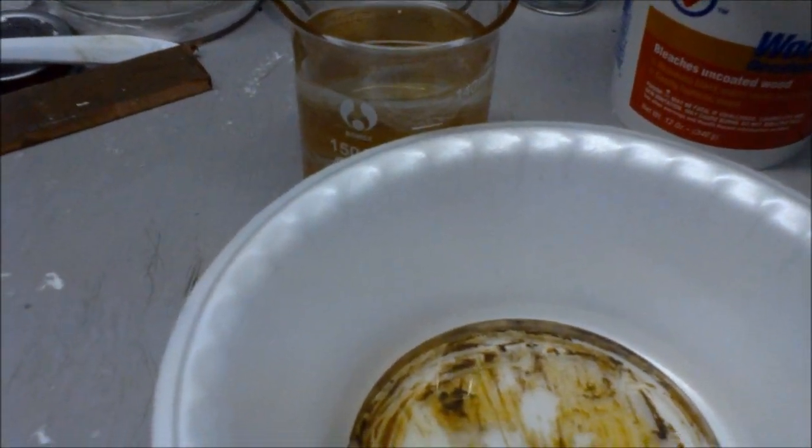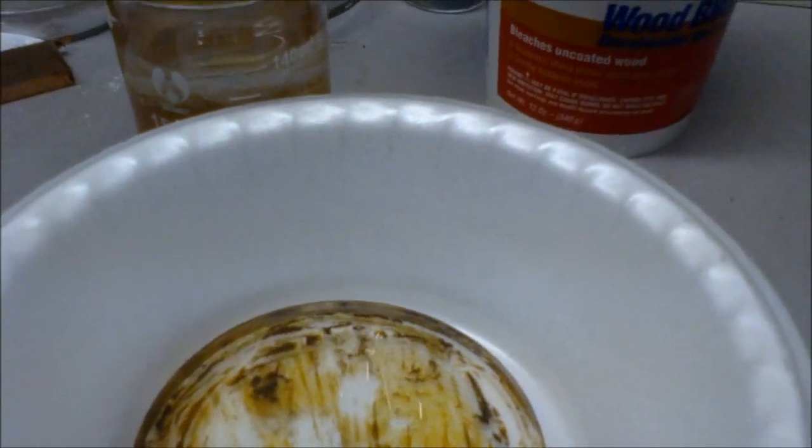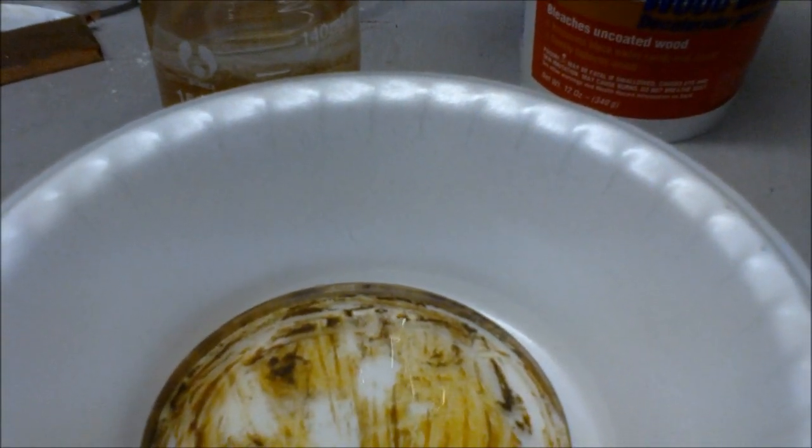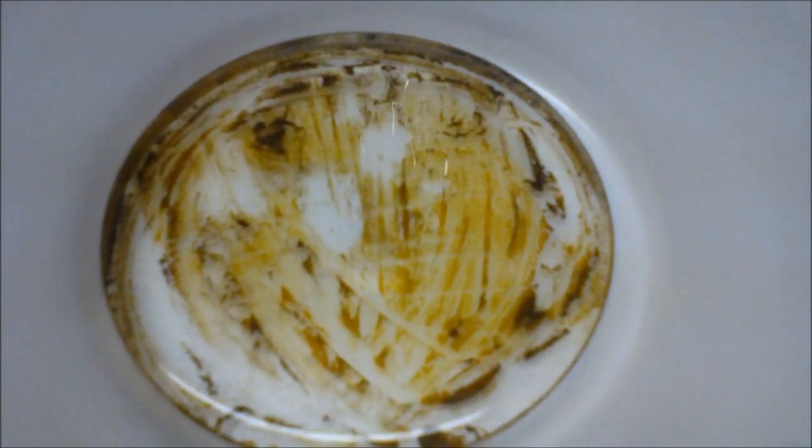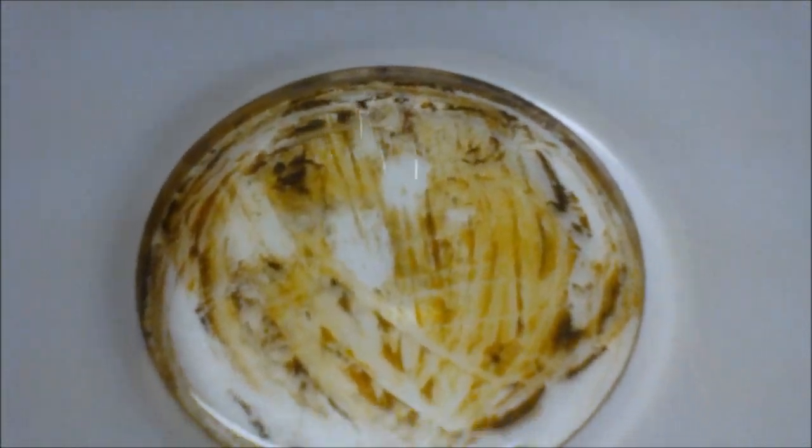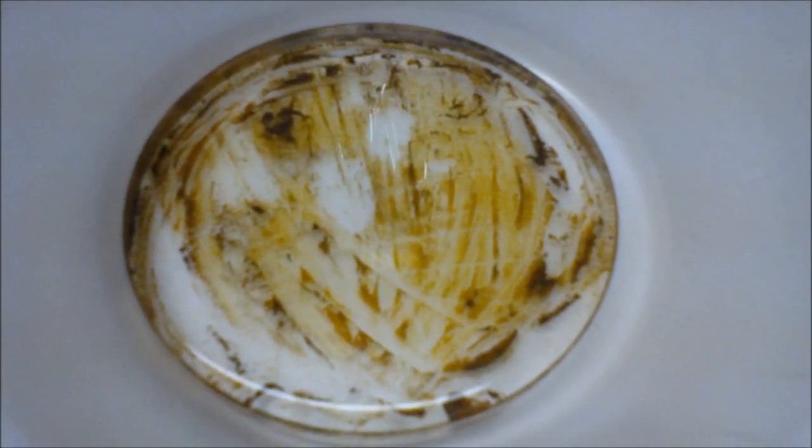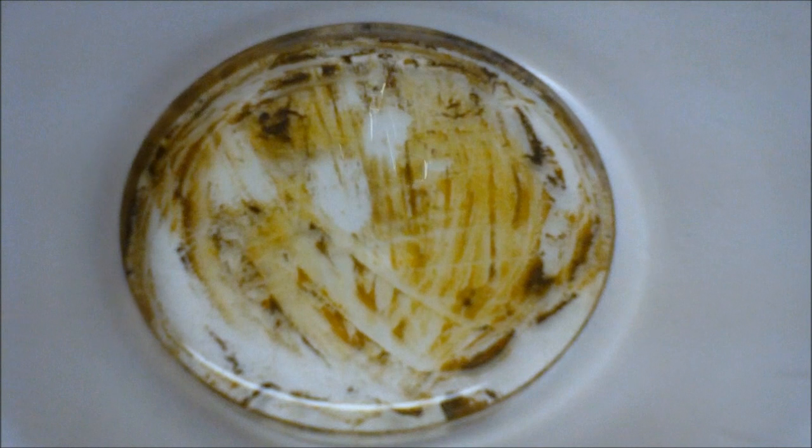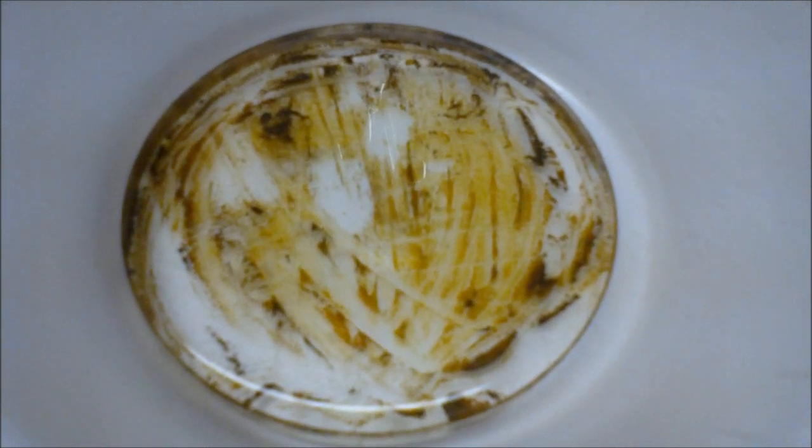Now all you have to do is wait. Oxalic acid can take from about one hour to ten hours, depending on how thick the rust is. So when these two vessels are done de-rusting, I'll show you what happened.